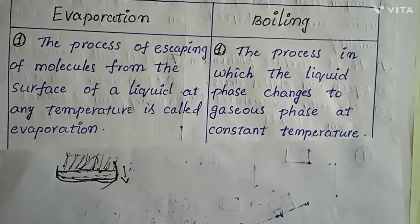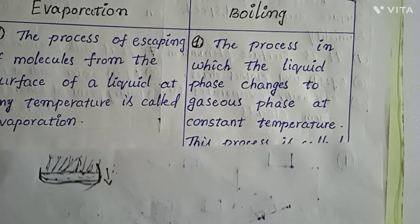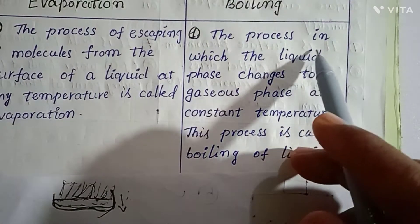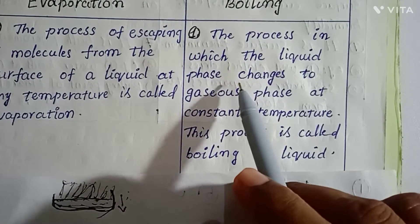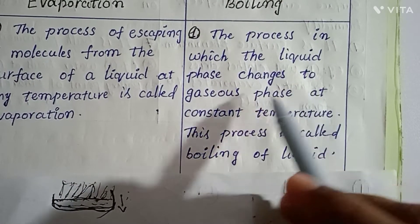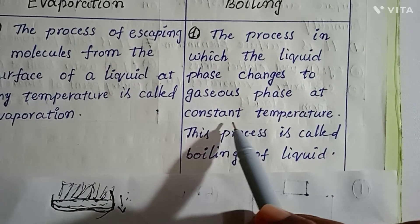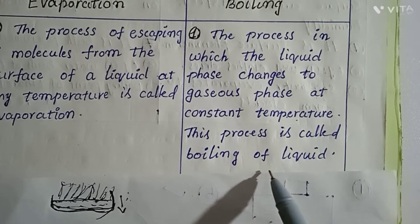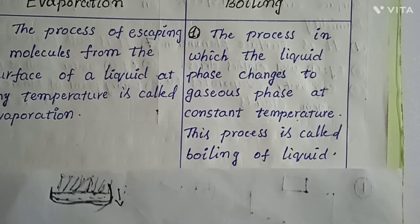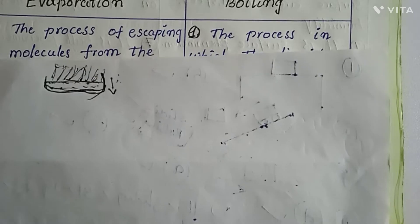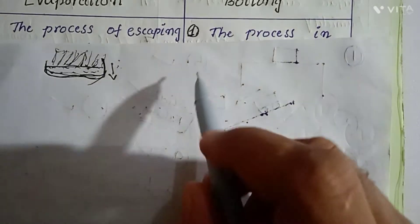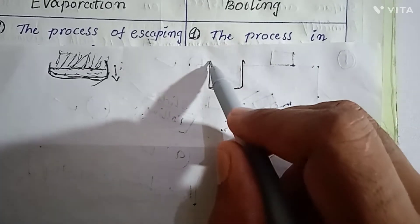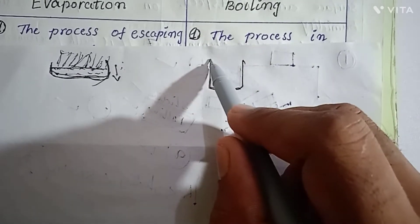Now see the definition of boiling here. Boiling — the process in which the liquid phase changes to gaseous phase at constant temperature. This process is called boiling of liquid. So, evaporation takes place at any temperature, whereas boiling takes place at a specific temperature.